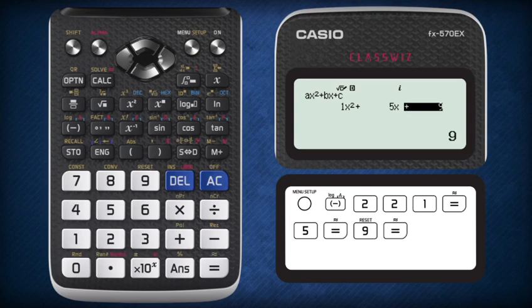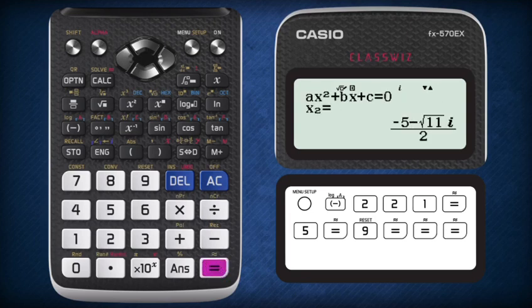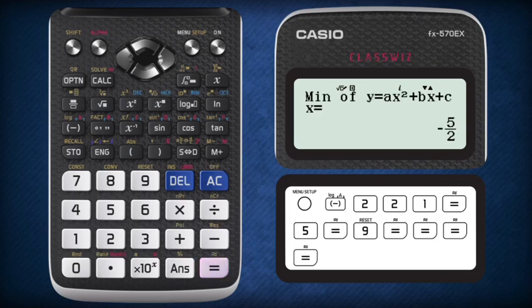Continuous pressing of the equal sign will first reveal the two roots of the quadratic equation, which in this case are imaginary. The roots are not real. Second, the corresponding value of x when y is minimum, which we know to be negative 5 over 2. And finally, the minimum value of y in this quadratic equation, which we know to be positive 11 over 4. So this confirms our answer.